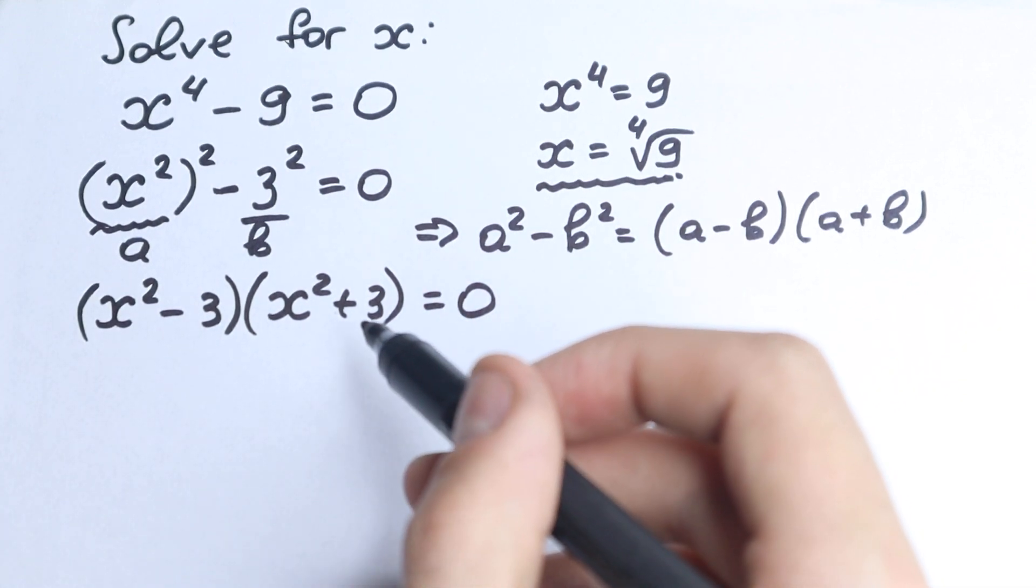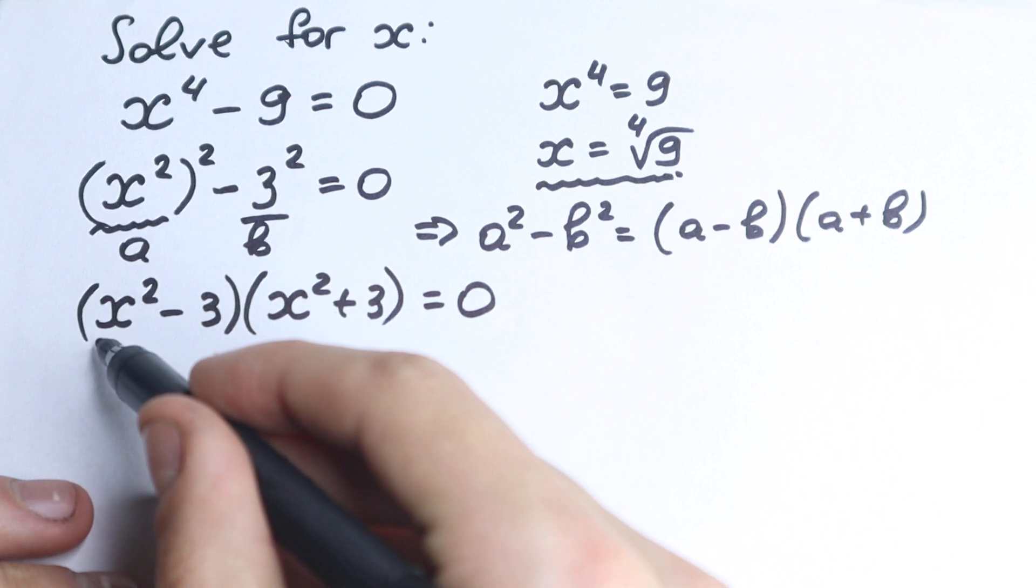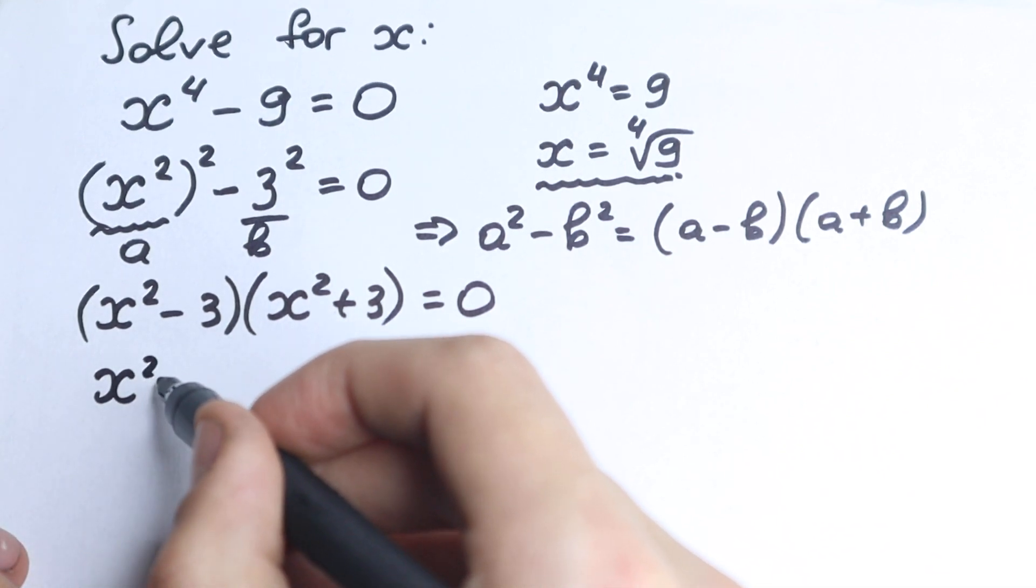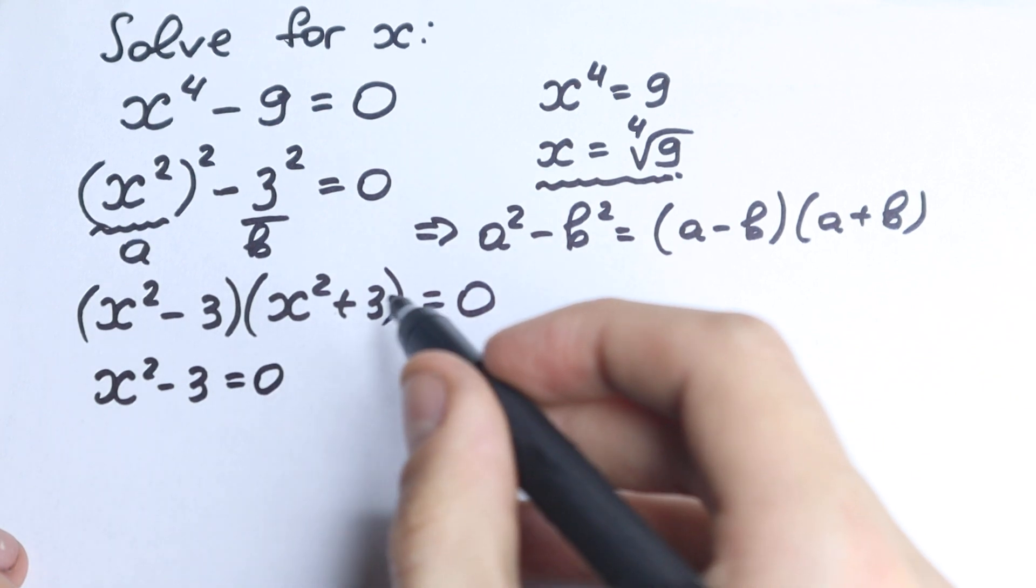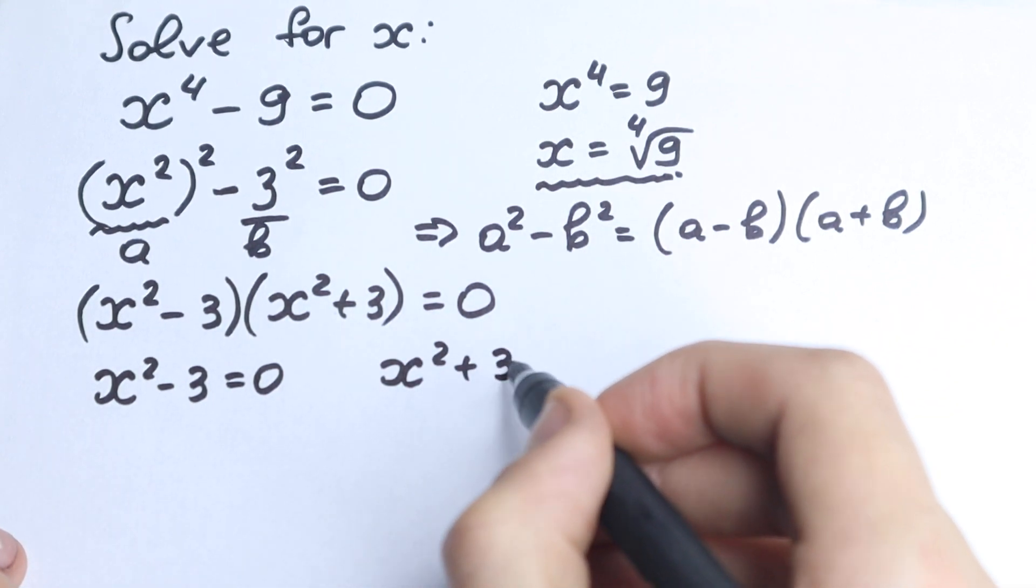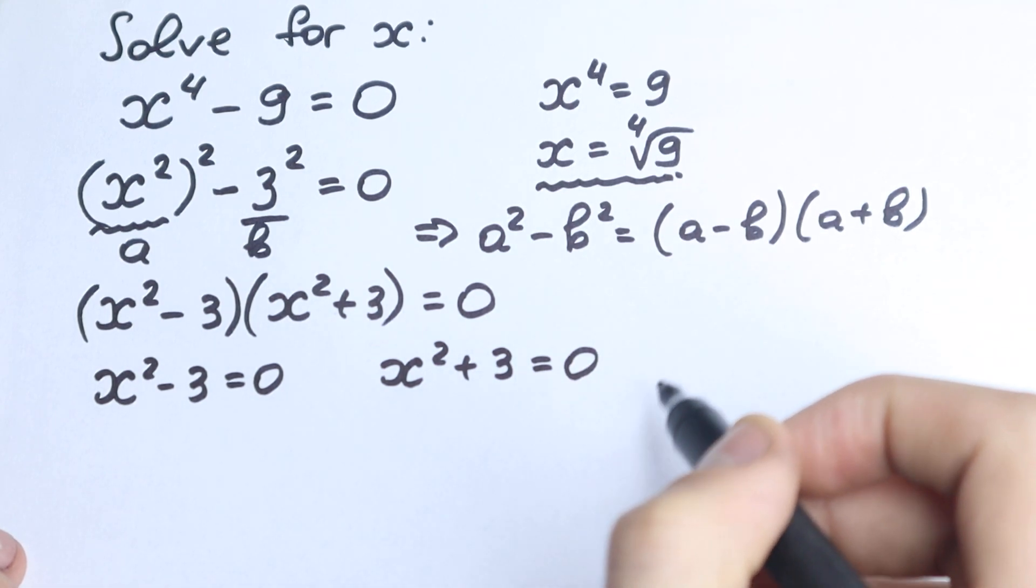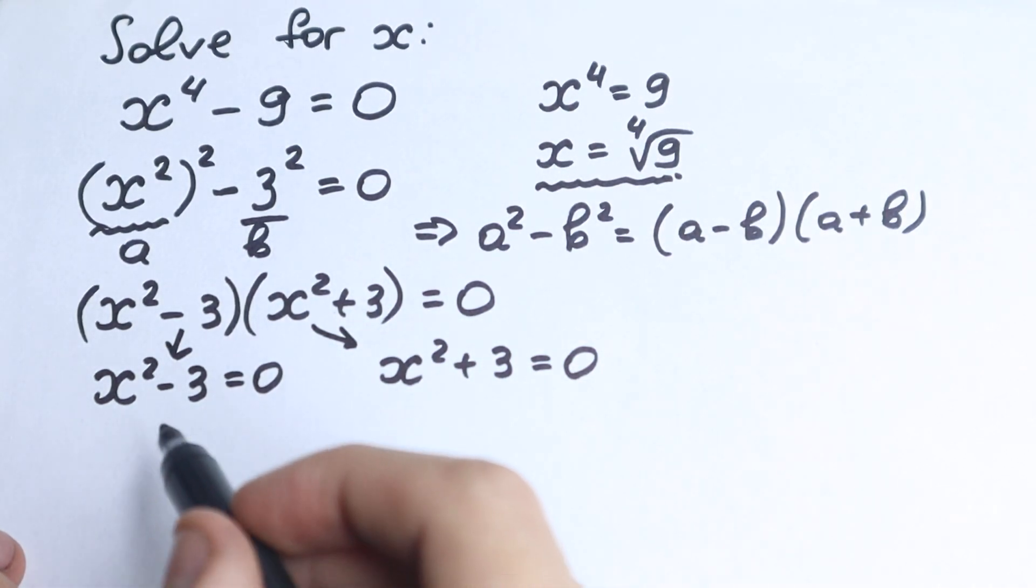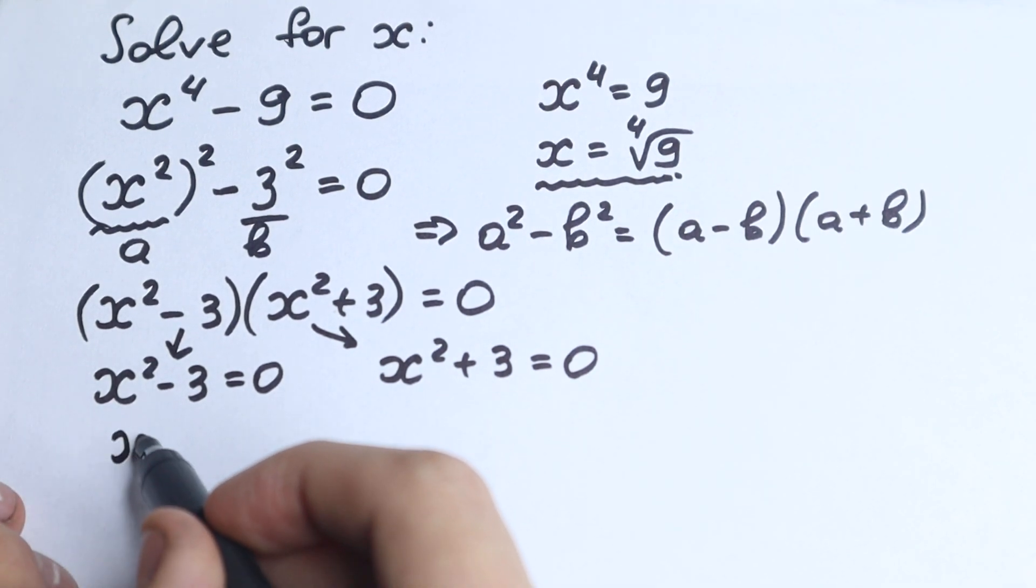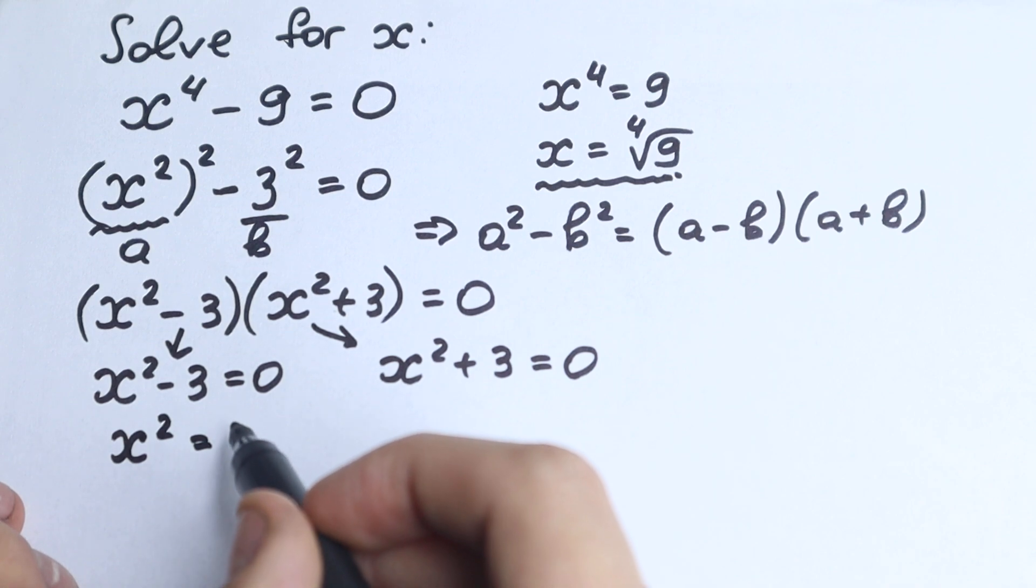And right now you should know that if you have a product equal to zero, then this one equals zero: x squared minus three equal to zero. So let's write it: x squared minus three equal to zero and x squared plus three equal to zero. Very simple equation.